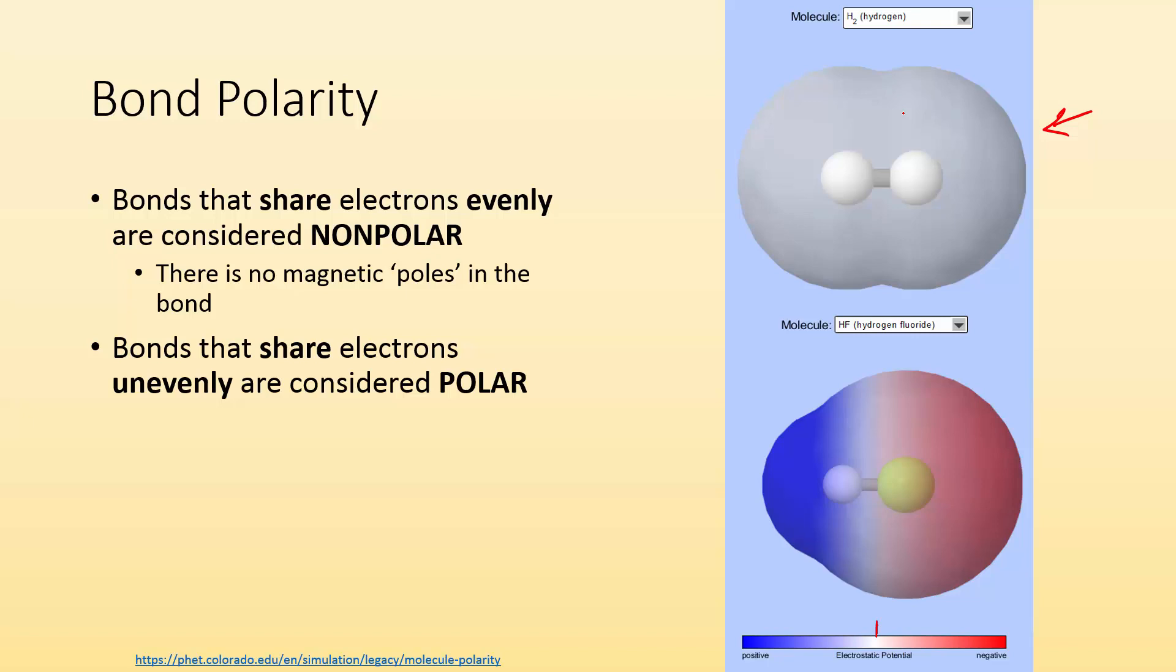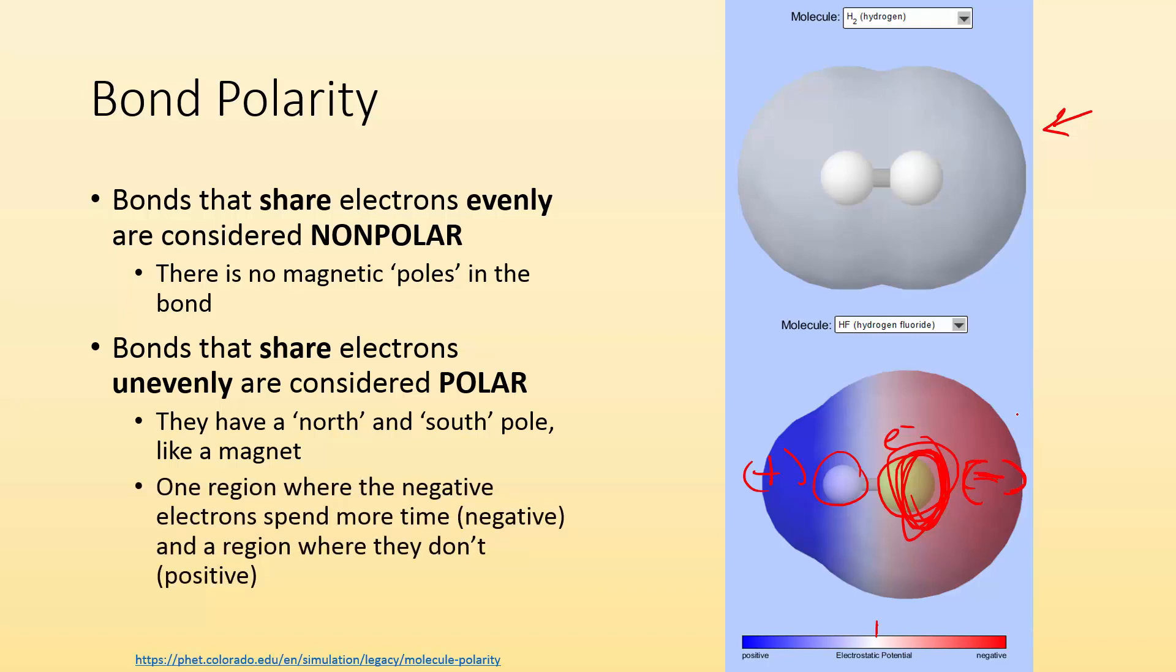But sometimes bonds can share them unequally. If electrons are shared unevenly, they're considered polar because they have a north and south pole like a magnet. You can see on this end we end up with a negative charge, and this end we have a positive charge because the electrons are spending more time around this end of the molecule than around this end. Electrons being negative cause this end of the bond to be negatively charged.